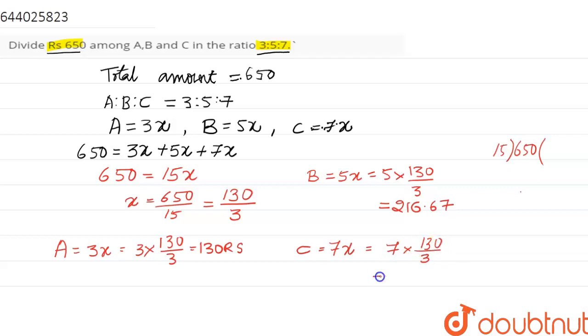These are the amounts received by A, B, and C. A receives 130 rupees, B receives 216.67 rupees, and C receives 303.33 rupees.